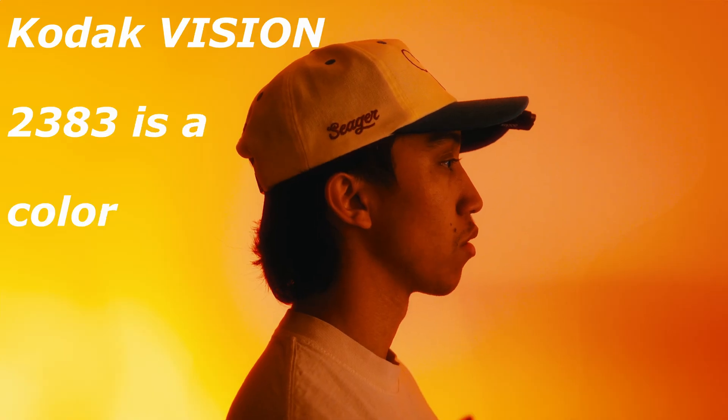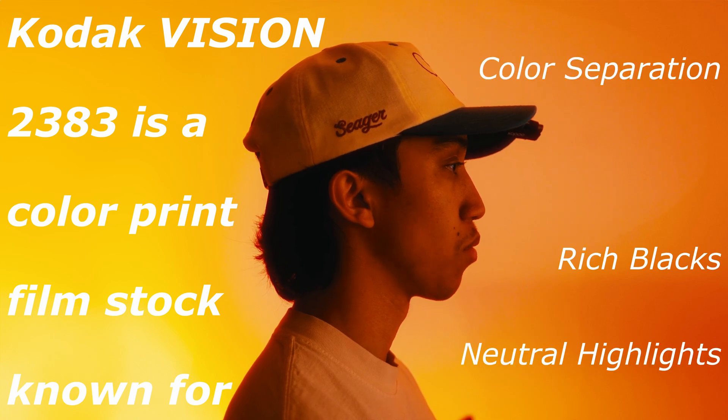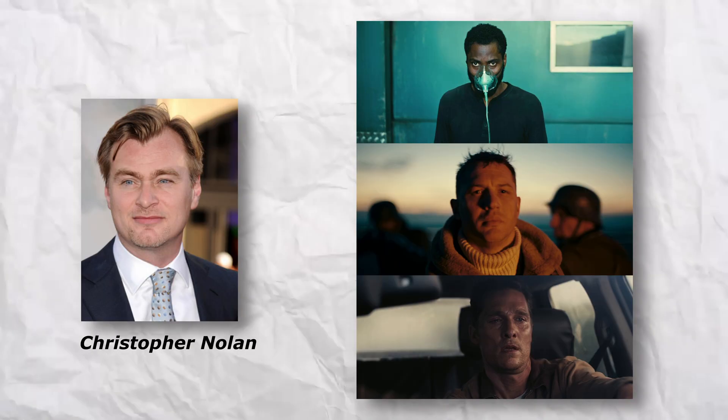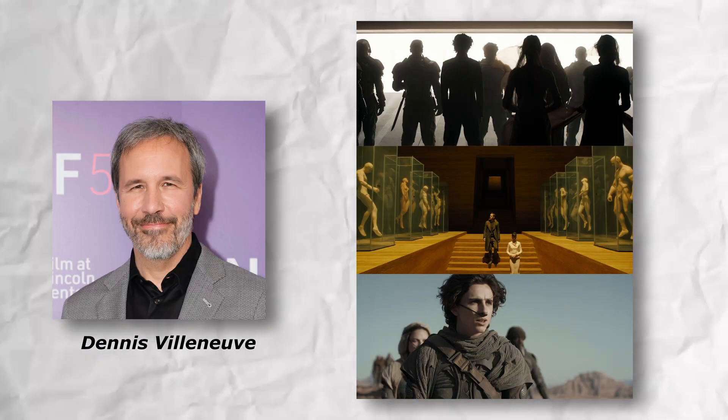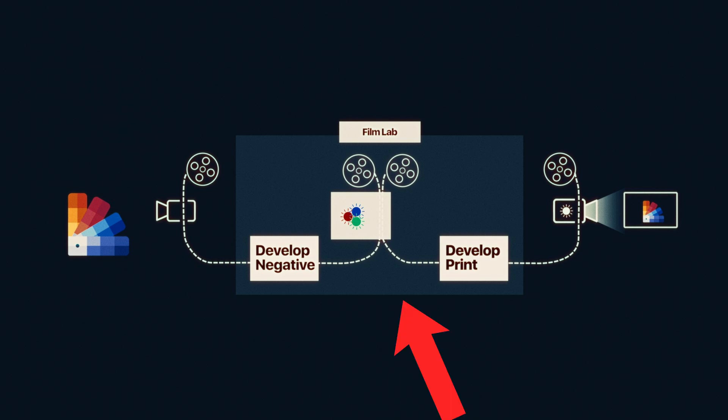Kodak Vision 2383 is a color print film stock known for its rich blacks, neutral highlights, color separation, and color density. It's because of these characteristics that this is the film stock used by some of the most famous directors in the world, including Christopher Nolan, Quentin Tarantino, and Denis Villeneuve, just to name a few. But sometimes they don't shoot straight to the film stock — that can get very expensive very quickly. What they'll do is either shoot the entire thing on digital or a negative film stock, color grade and edit the footage, and then print it back onto the Kodak 2383 film stock to get the desired look.